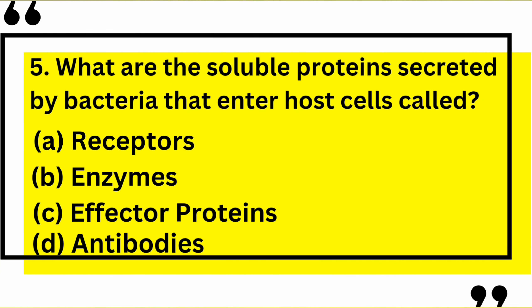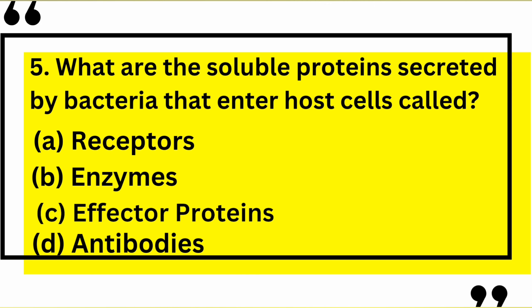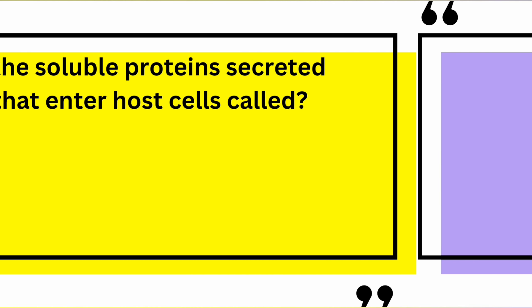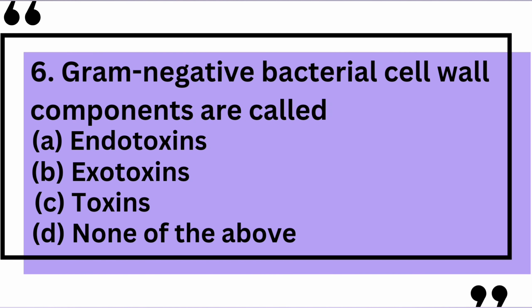What are the soluble proteins secreted by bacteria that enter host cells called? Yes, the correct answer is C: effector proteins. Gram-negative bacterial cell wall components are called — yes, the correct answer is A: endotoxins.